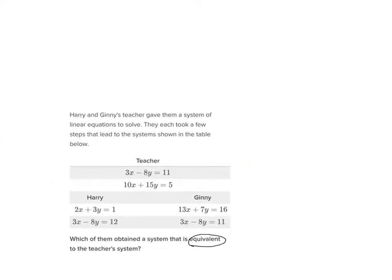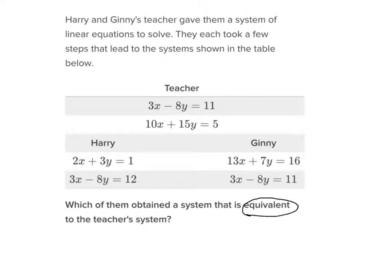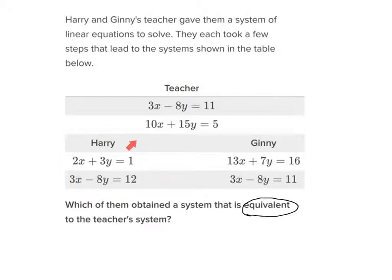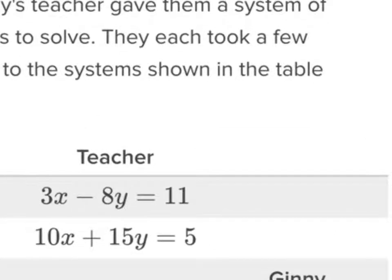So let's look at this example right here. Harry and Jenny's teacher gave them a system of linear equations to solve. Harry has his own system and Jenny has her own system, and then the teacher's got a system. They each took a few steps that led to the system shown in the table below. Which of them obtained a system that is equivalent? To tell if Harry's is equivalent to the teacher's or if Jenny's is equivalent to the teacher's, I've got to solve the teacher's, then solve Harry's, then solve Jenny's, and the ones that match the teacher's solution are equivalent. The easiest way to solve a system of equations is with elimination, where you're either trying to get rid of the X or get rid of the Y.